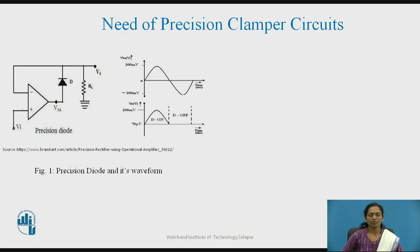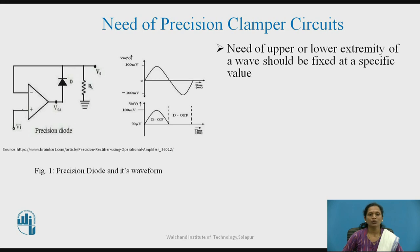Before moving towards the positive clamper circuit, you must know what clamper circuits are and why precision clamper circuits are required. Clamper circuits are circuits which clamp — that is, shift — the DC level of a signal towards the positive or negative side, with reference to a reference voltage applied to it. In a usual clamper circuit, we use a capacitor and diode to obtain the clamping action.